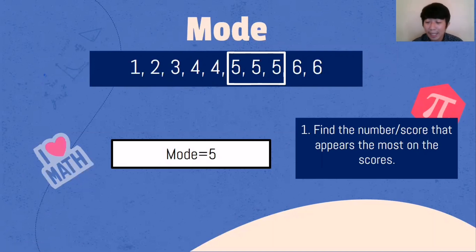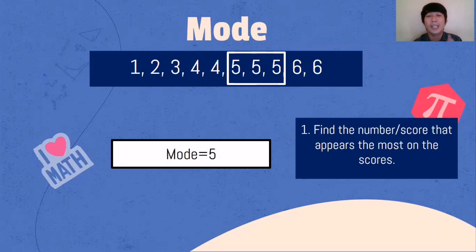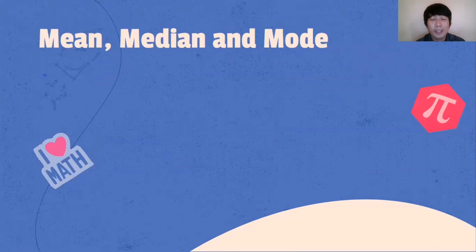So we already found mean, median, and mode. For the mean, add all the scores divided by the total number of scores. For median, find the middle most score if odd; if even, find the two middle scores and divide by 2. For mode, find the score that appears the most.